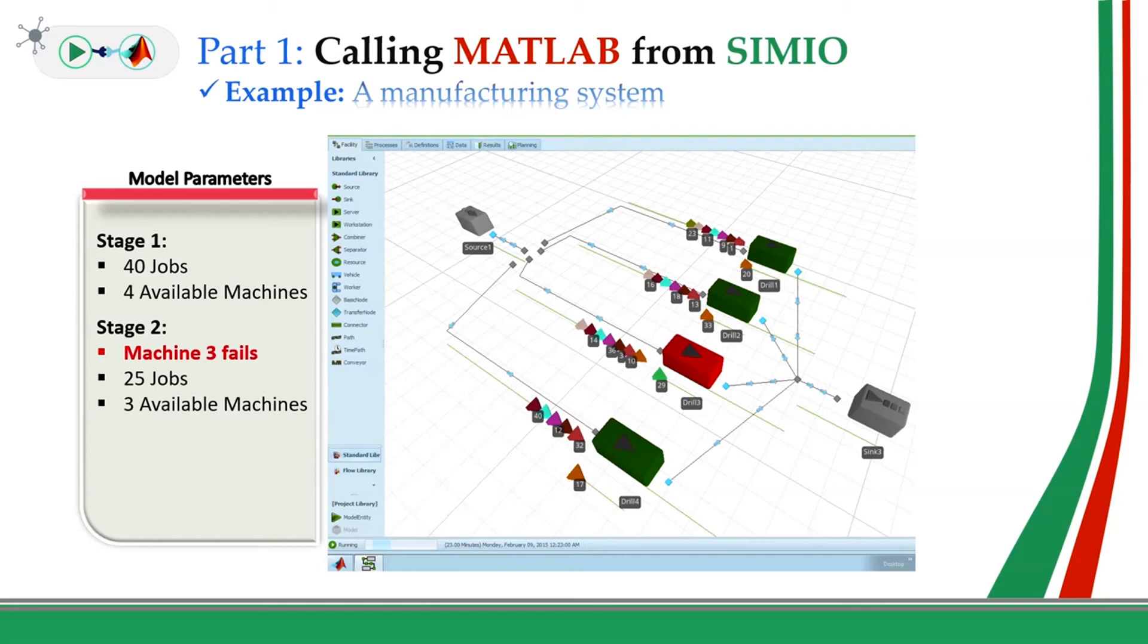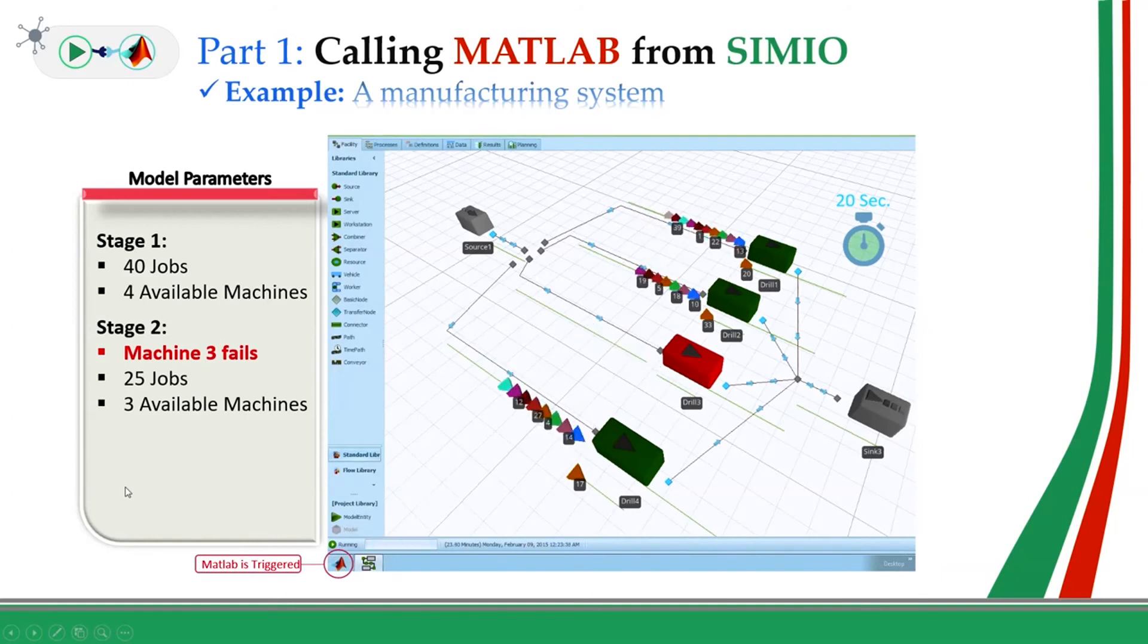At this, a scheduling problem has to be solved to redistribute the existing 25 jobs on 3 available machines. To do so, as is shown here, SIMEO is paused, not stopped. And MATLAB is triggered to run the optimization algorithm to obtain an optimal scheduling based on the current status of the simulation model. Once the problem is solved, SIMEO's configuration is updated. And now all of the jobs are distributed among these three machines based on the new scheduling solution.